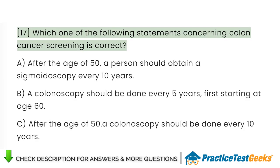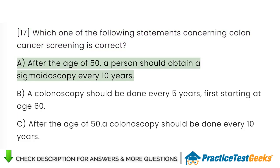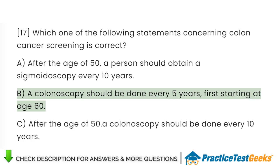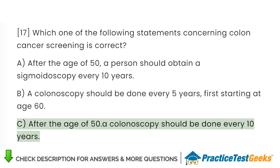Which one of the following statements concerning colon cancer screening is correct? A. After the age of 50, a person should obtain a sigmoidoscopy every 10 years. B. A colonoscopy should be done every 5 years, first starting at age 60. C. After the age of 50, a colonoscopy should be done every 10 years.